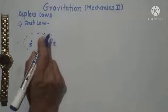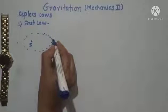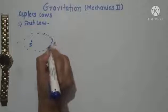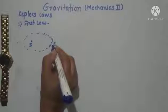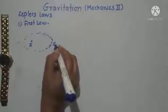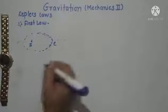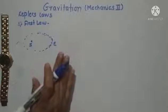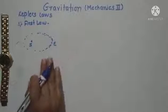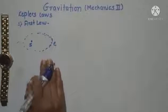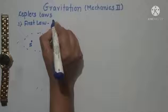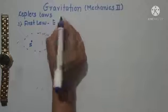So the Earth revolves in an elliptical orbit around the Sun — not only the Earth but all the planets present in our solar system. Every planet follows this first law.